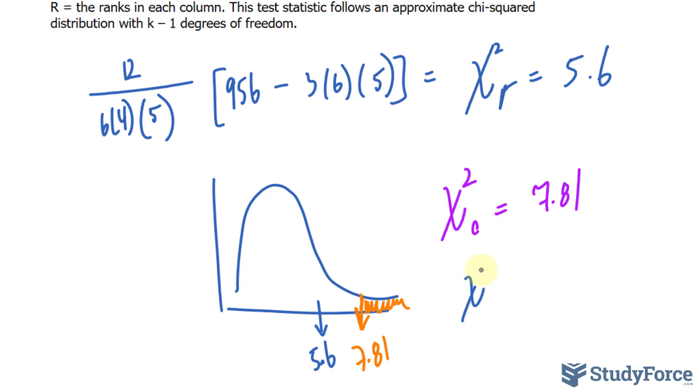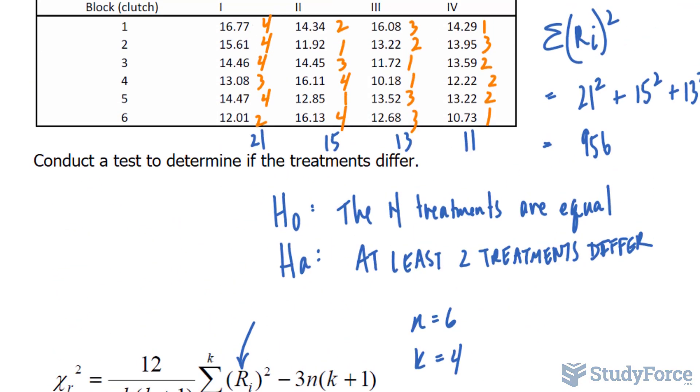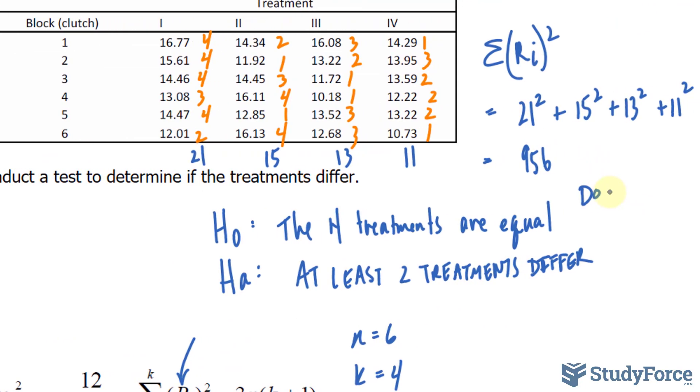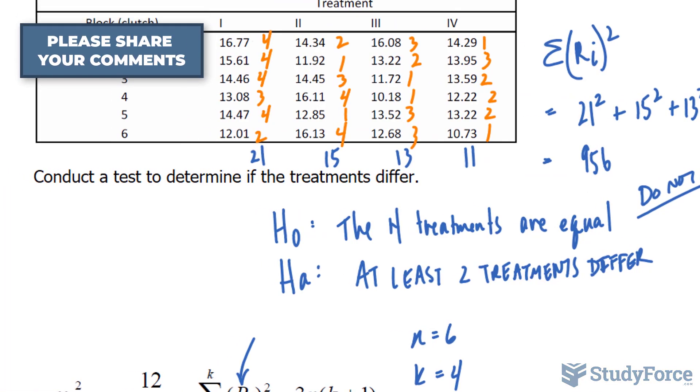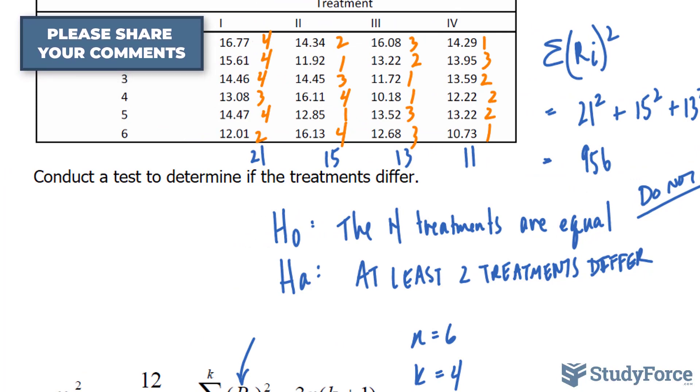Now because chi-square observed is less than chi-square critical, we do not reject the null hypothesis. We do not reject this because we do not have enough evidence to favor the alternative that at least two treatments differ. So to conclude, all treatments seem to have the same effect.